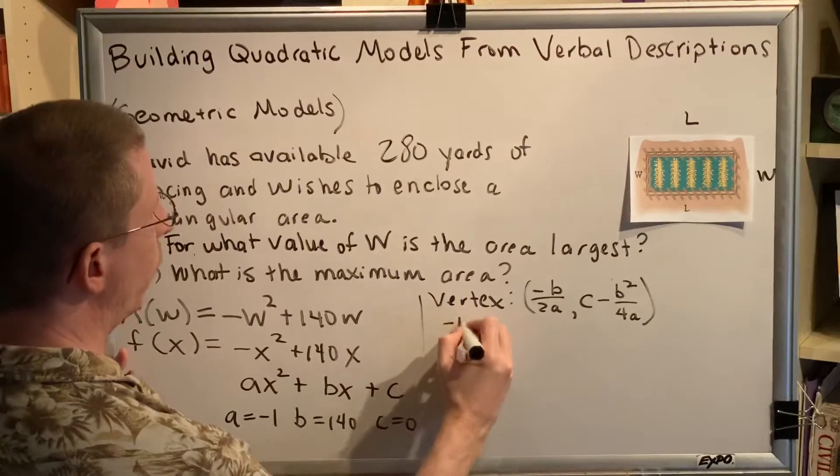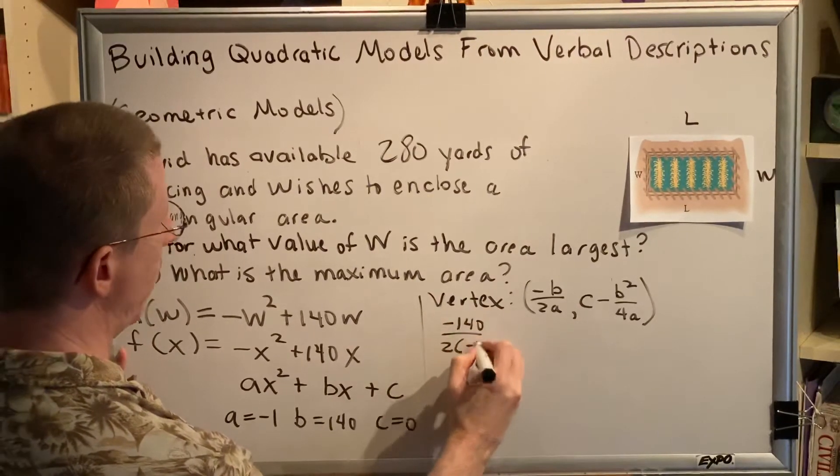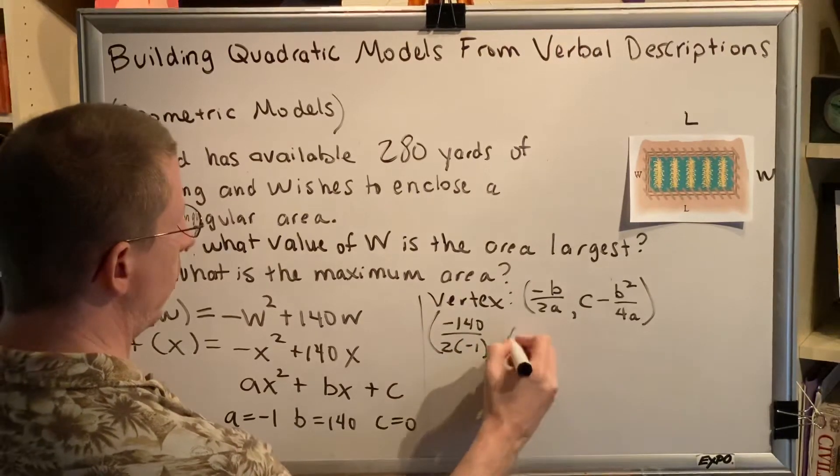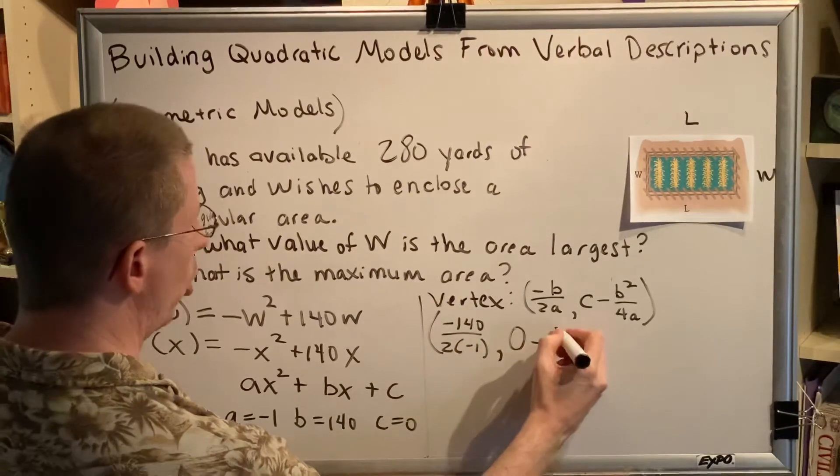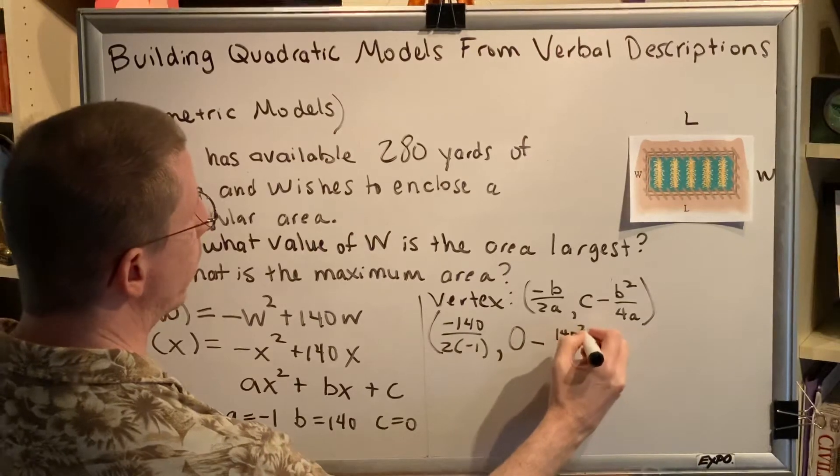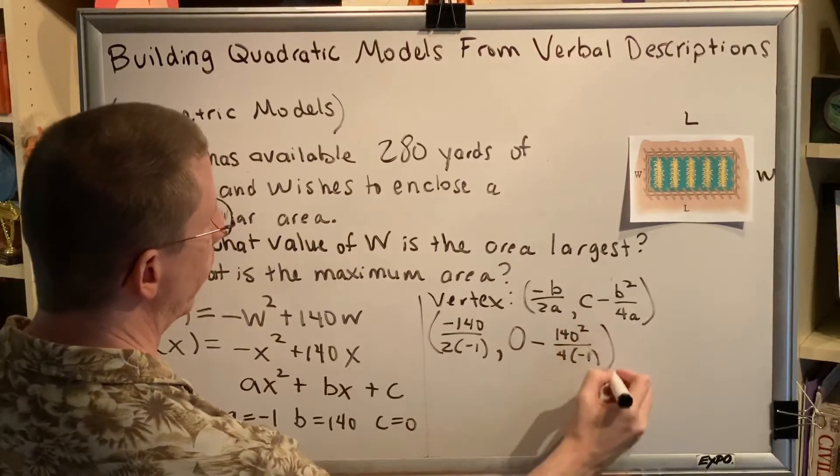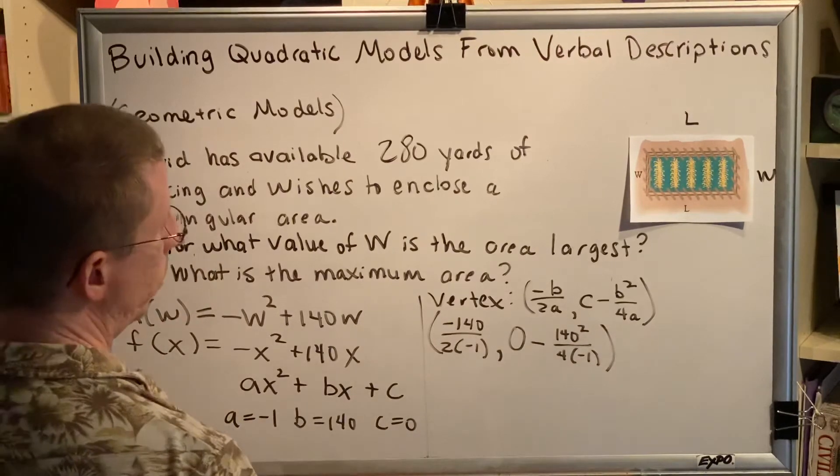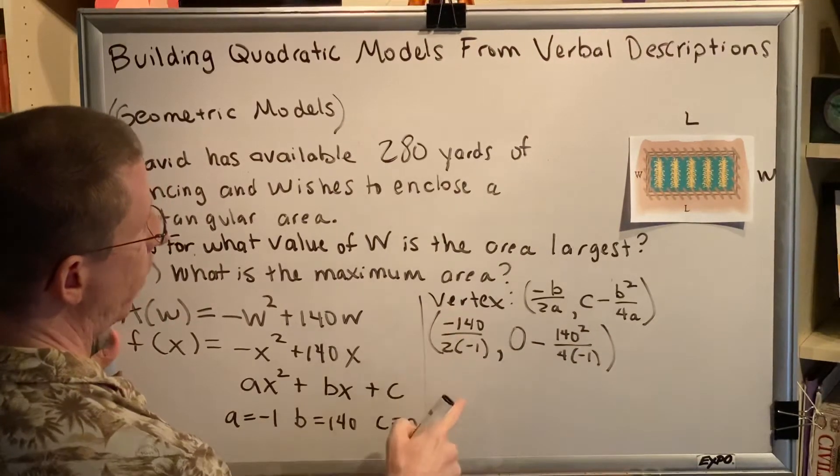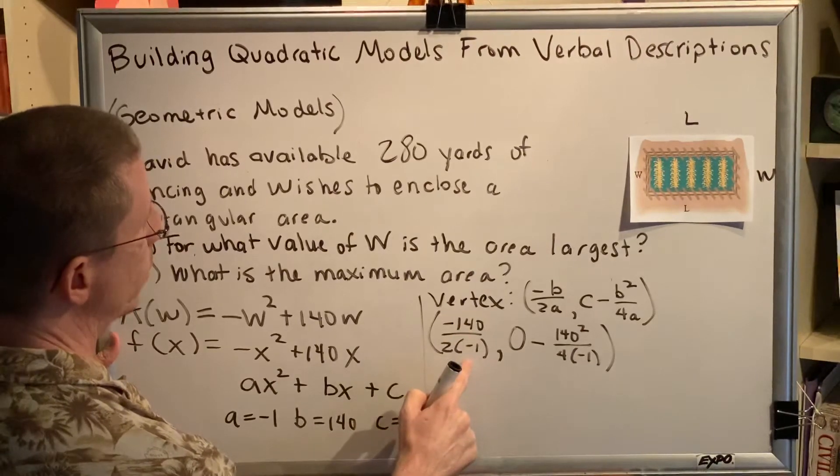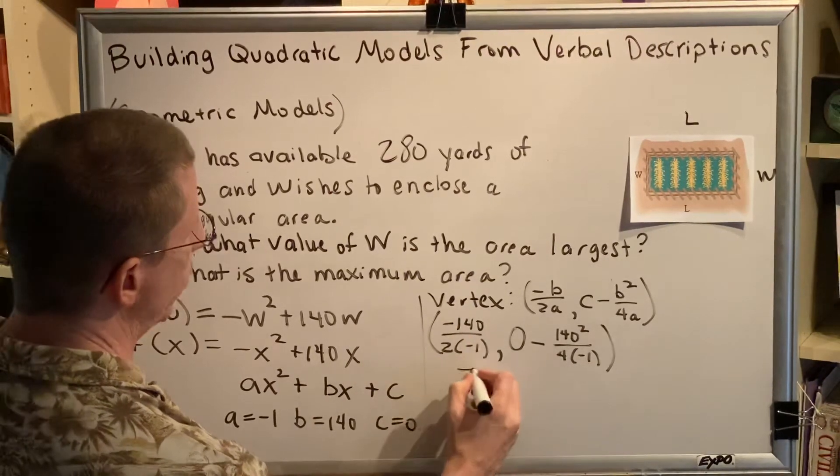So, negative 140 over 2 times negative 1, there's your X coordinate, and then 0 subtract 140 squared over 4 times negative 1. At the top is negative 140, at the bottom is negative 2. A negative divided by a negative is a positive, and 140 divided by 2 is 70.